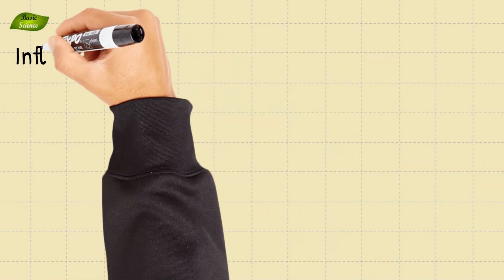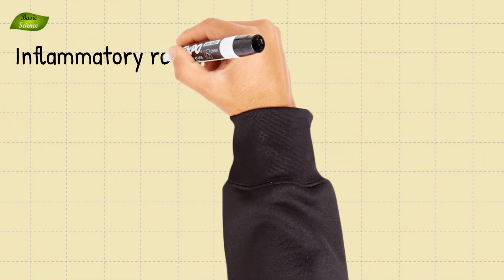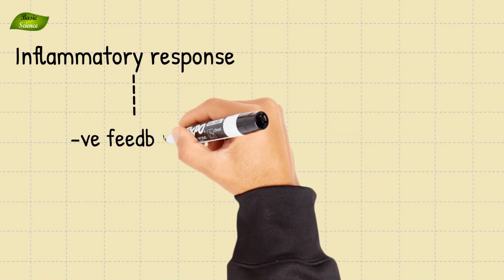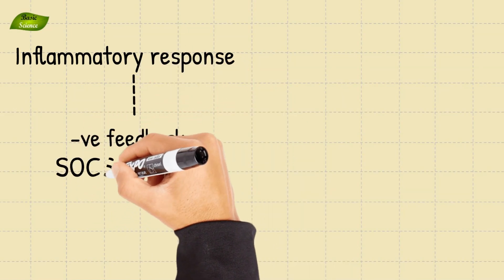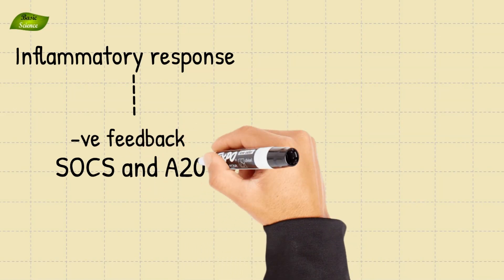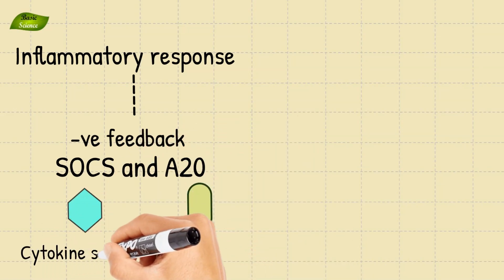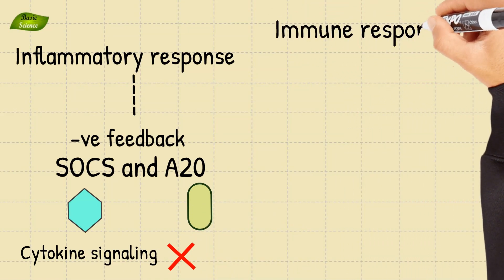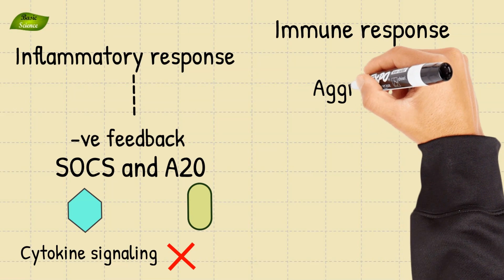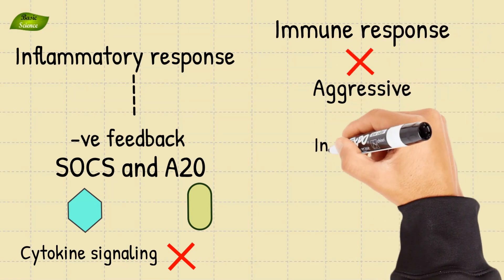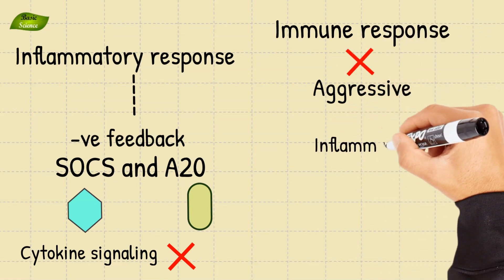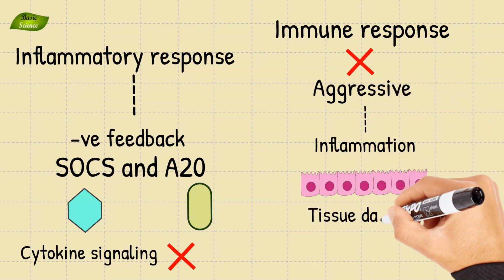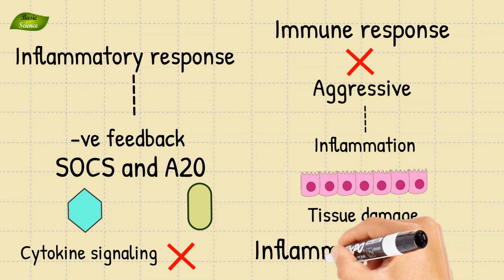The resolution of the inflammatory response is tightly regulated by negative feedback mechanisms. Proteins like SOCS and A20 act as negative regulators, inhibiting cytokine signaling and preventing the immune response from becoming overly aggressive. This regulatory process is essential to avoid excessive inflammation, which can lead to tissue damage and contribute to the pathogenesis of inflammatory diseases.